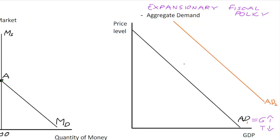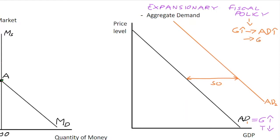Now if the government were to spend, let's say, 50 billion in their expansionary package, what should happen is the aggregate demand curve should expand by at least that 50 billion — and with a multiplier effect it may be even higher. However, with expansionary fiscal policy and an increase in government spending, this has a knock-on effect on aggregate demand and hence the GDP level.